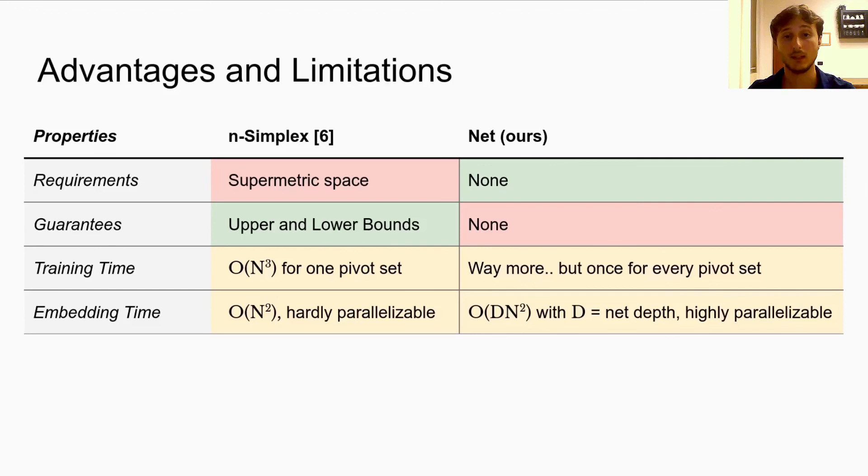The embedding time for both methods is quadratic in the number of pivots, our method depending also on the depth of the network. However, the simplex embedding procedure is iterative in nature and hardly parallelizable, and when comparing GPU implementation of both methods, our network is often faster.